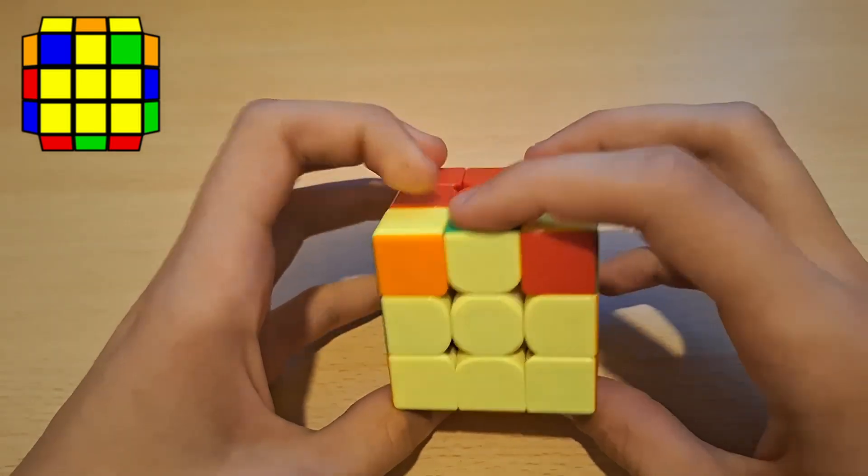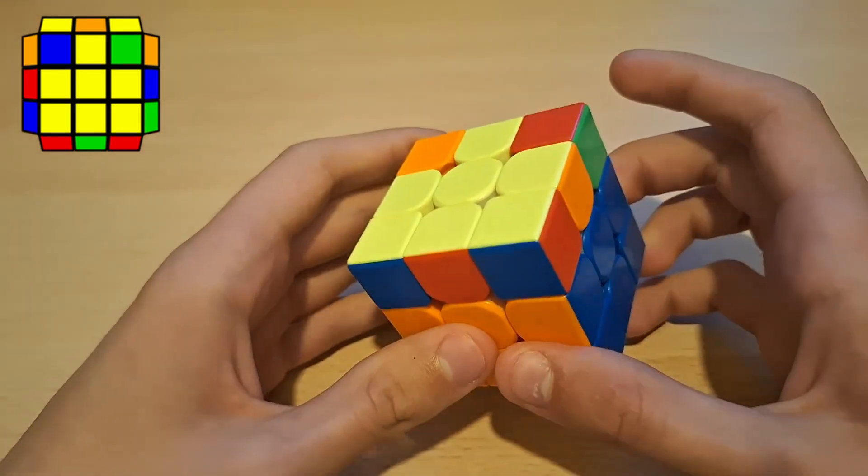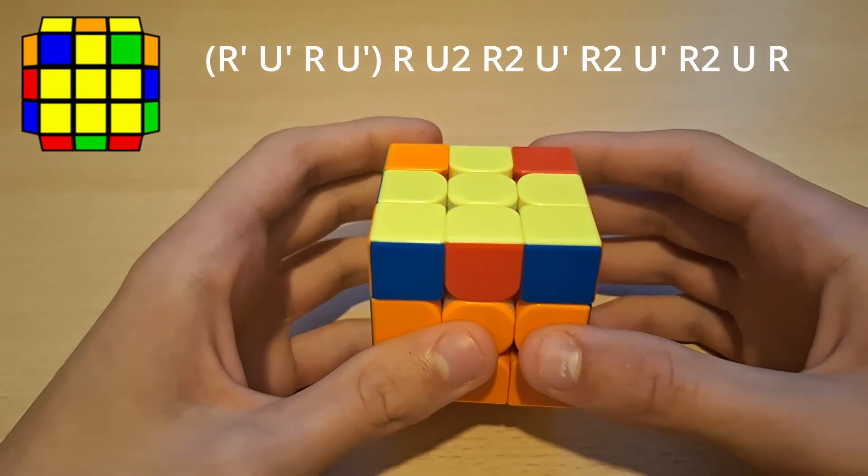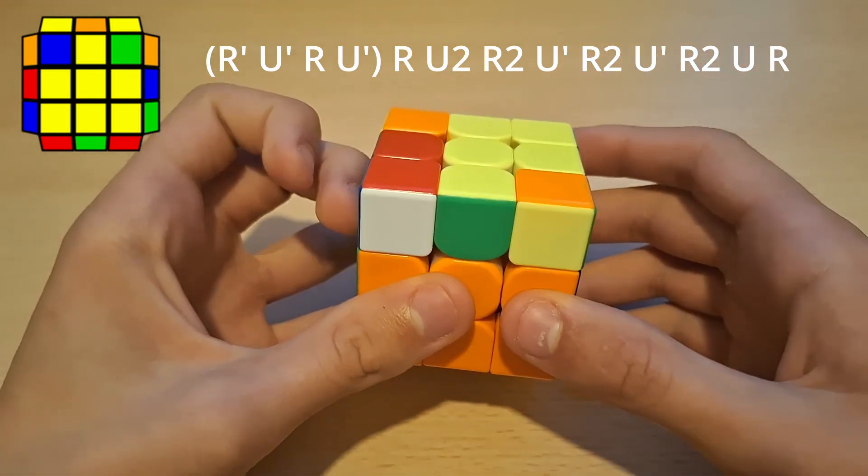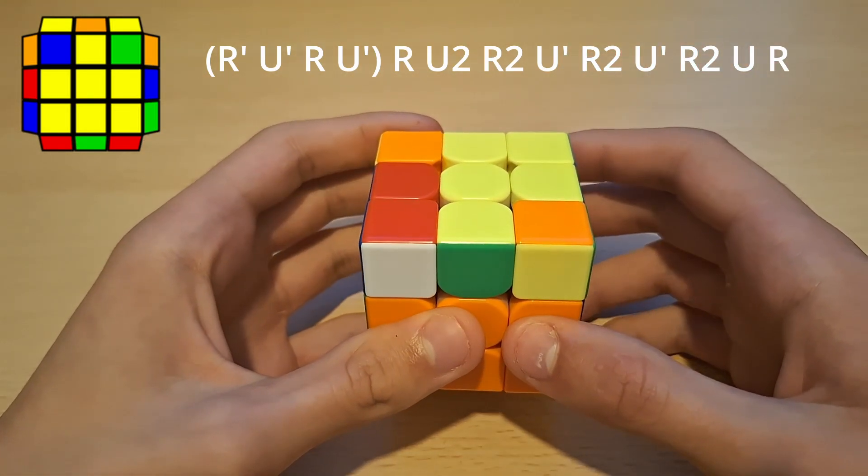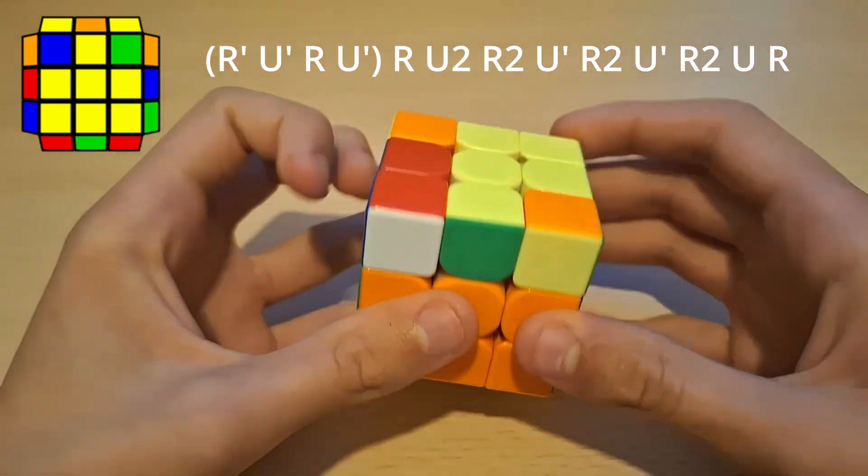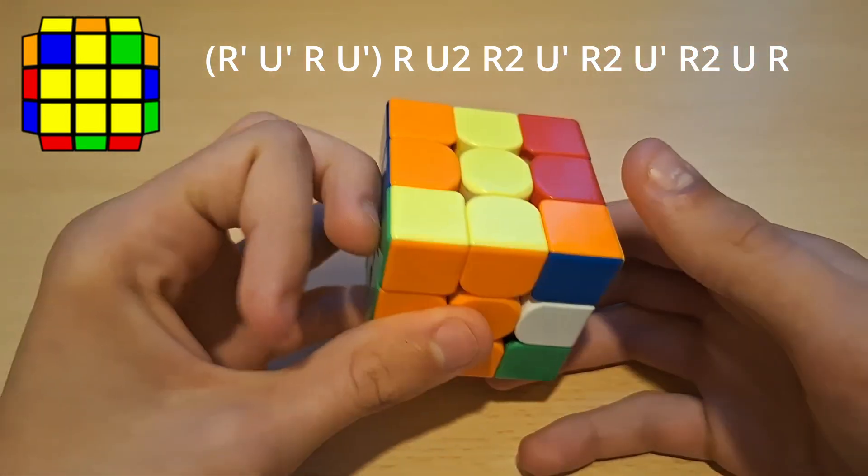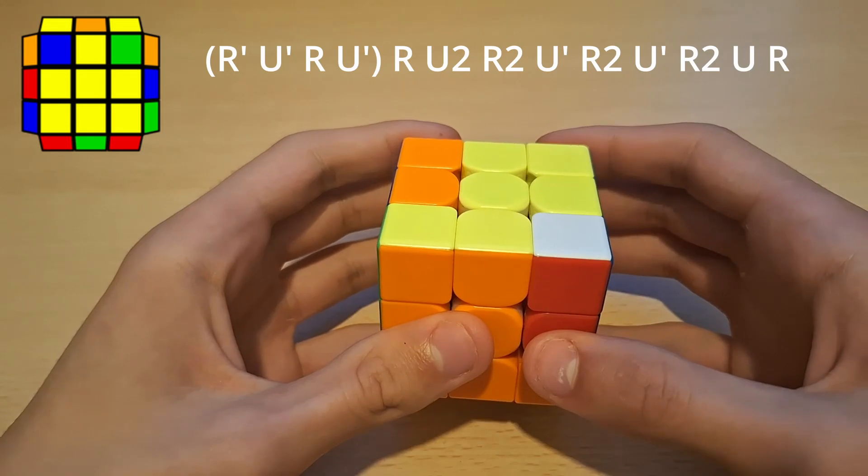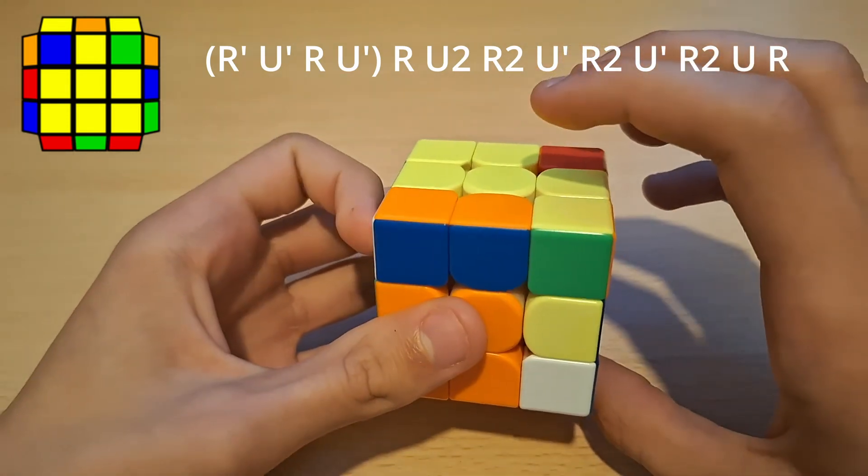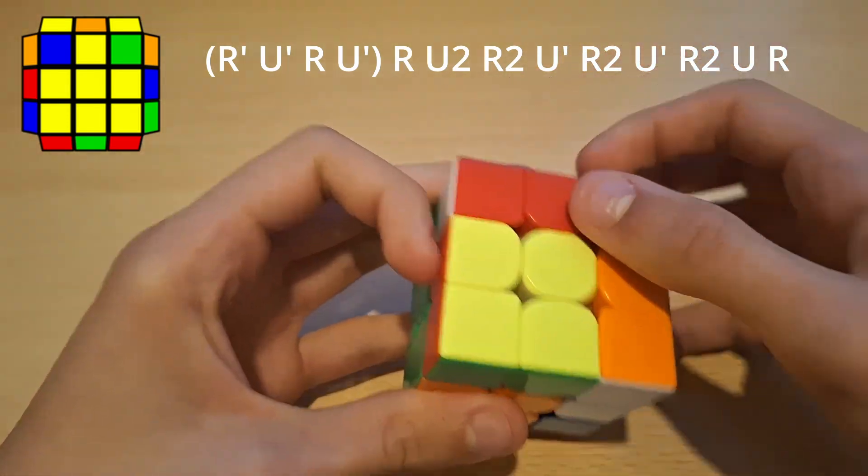Alright now for the next ZBLL how I recognize this is this is pretty much a GA-perm as you can see. And this is solved of course. Now the algorithm for this, it's a bit tough to explain, but pretty much what you do is you do a back sune and here instead of ending with R'U2R, you end with R'U2R' and then you insert this pair like this and you insert this pair.